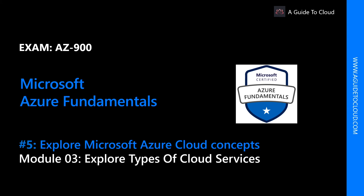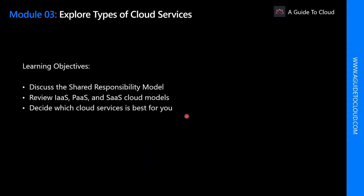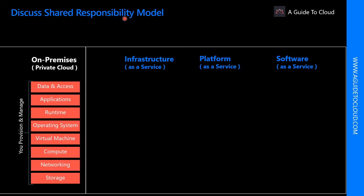Welcome back. We just finished learning about various types of cloud models — public, private, and hybrid. In this module, we're going to learn about types of cloud services which include IaaS, PaaS, and SaaS. My name is Sushant Sudish and I am your instructor for this AZ-900 exam series. In this module we're going to talk about the shared responsibility model, review what IaaS, PaaS, and SaaS are, and decide which cloud service is best for you.